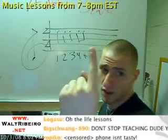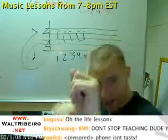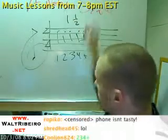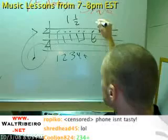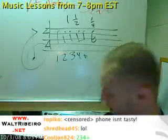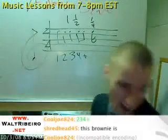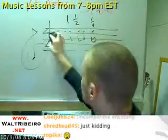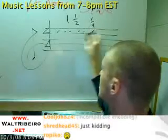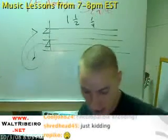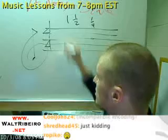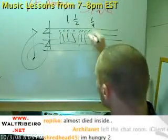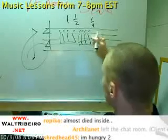Quarter notes get one beat. Eighth notes get half a beat — one half. So if eighth notes get half a beat, quarter notes get one beat, and don't forget this — 16th notes get a quarter of a beat. I could have any permutation of any note you could think of in your wildest imagination, as long as they add up to four beats. So I can have eight eighth notes. I can also have four eighth notes, four sixteenth notes, and one quarter note.